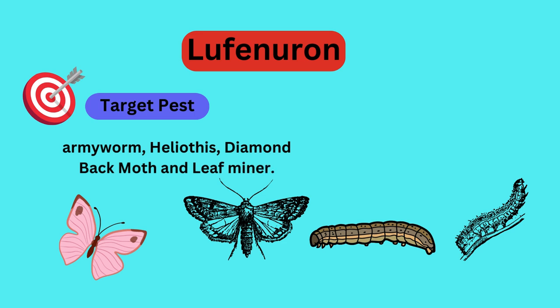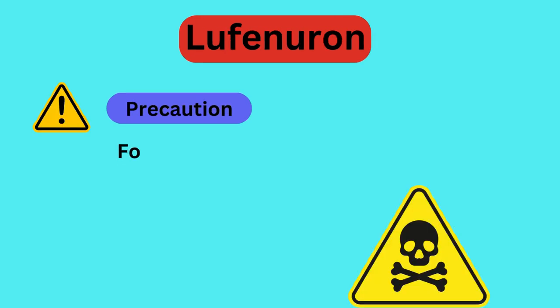It is commonly used in cotton, onion, potato, citrus, and cabbage for a wide range of insects such as armyworm, heliothis, diamondback moth, and leaf miner.